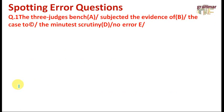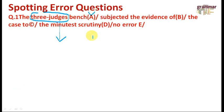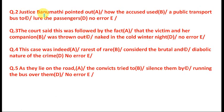Now let us see the spotting error questions picked from this article. You have to figure out the grammatical mistake in any part of the sentence, and that part is your answer. Question one: 'The three judge bench subjected the evidence of the case to the most manifest scrutiny.' In this sentence, 'three-judge bench' is a compound noun implied by the hyphen. In compound nouns, we do not use the modifying noun in the plural — so it should be 'three-judge' not 'three-judges.' The answer is option A.